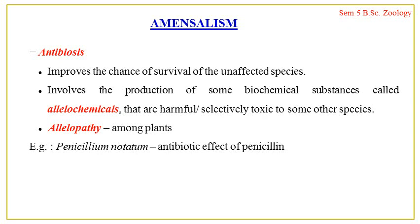First among the negative population interactions is amensalism. Amensalism is a negative inter-specific population interaction, or antagonistic interaction between two species, wherein one species is getting harmed by the other while the first one is not benefited and not harmed at all — it is not affected at all. It is a relationship where one species is negatively affected while the other is not affected at all.